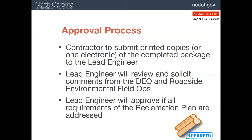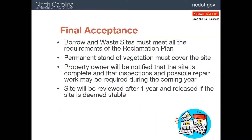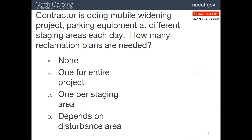The reclamation plan is approved by submitting the plan to the lead engineer, who reviews it and gets input from the department environmental officer and the roadside environmental unit field operations staff. Once the requirements are addressed, the lead engineer will approve the plan. Once operations cease in the area, it has to be accepted by the landowner, who is notified of any additional stabilization efforts that are needed and that a final inspection will occur a year later.